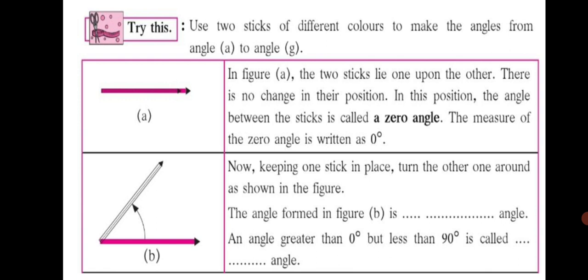Let's go to figure B. Keeping one stick in place, turn the other one around as shown in the figure. The angle formed in figure B is an acute angle. An angle greater than 0 degree but less than 90 degree is called an acute angle. The angle formed in figure C is a right angle. An angle of 90 degree is called a right angle. This concept you already know — let's revise it.